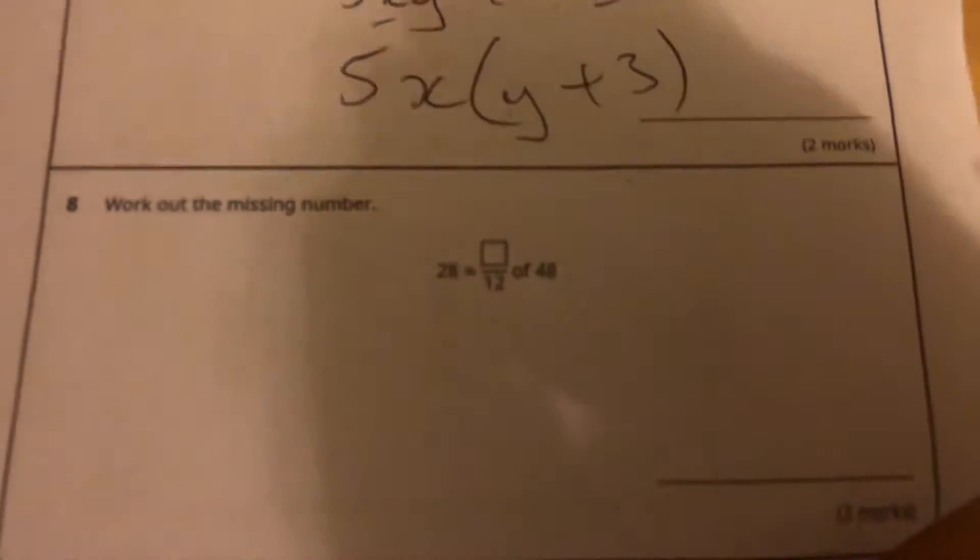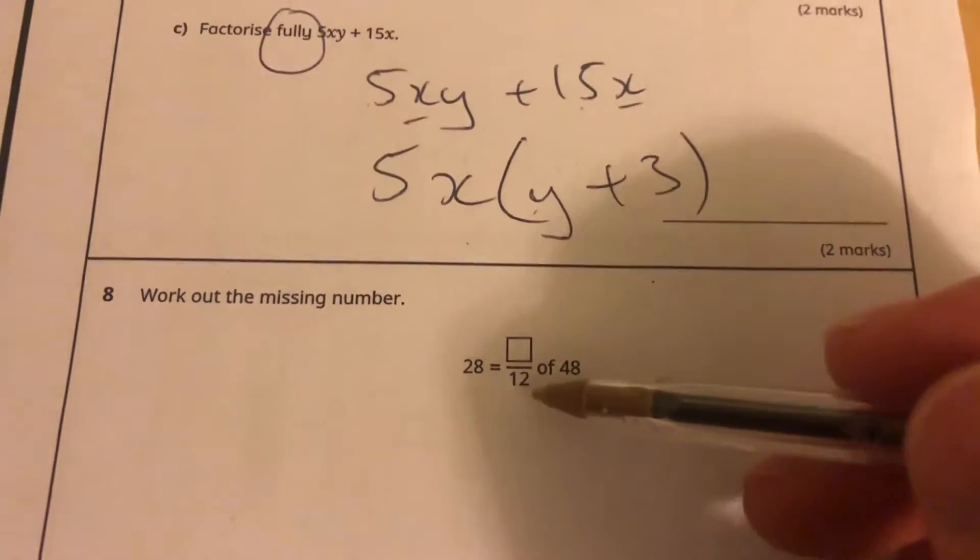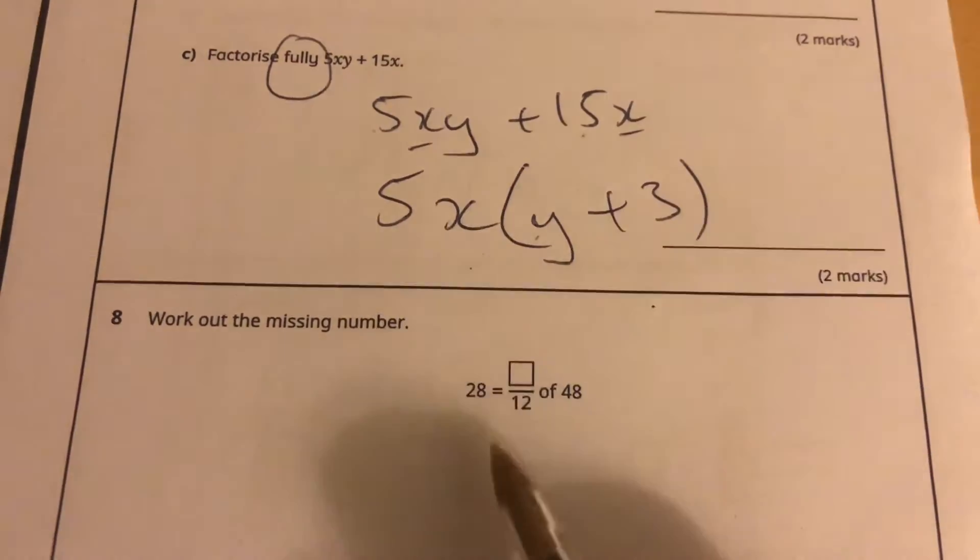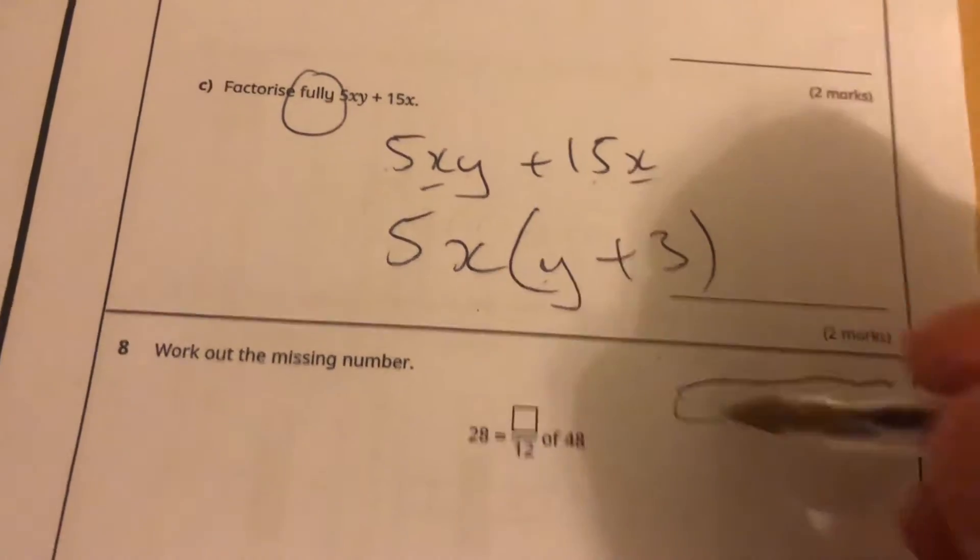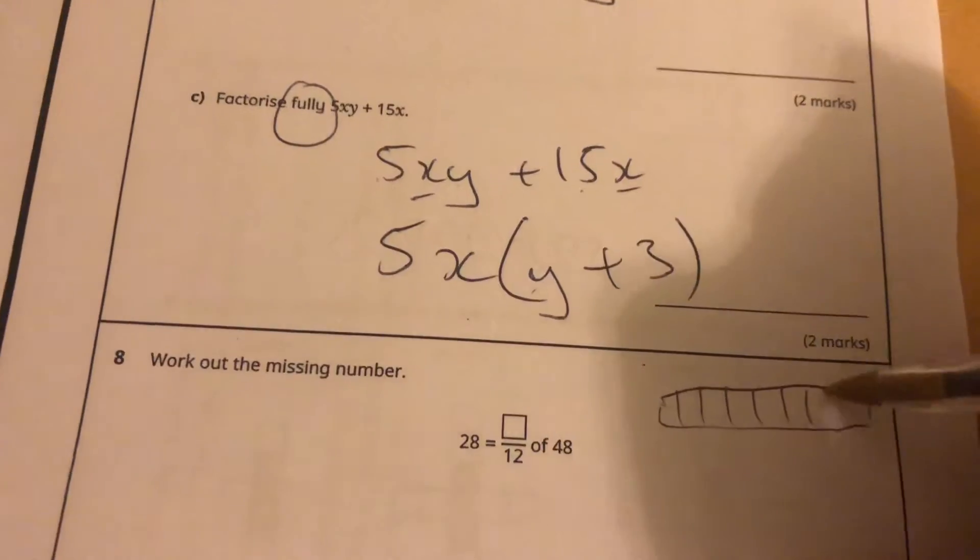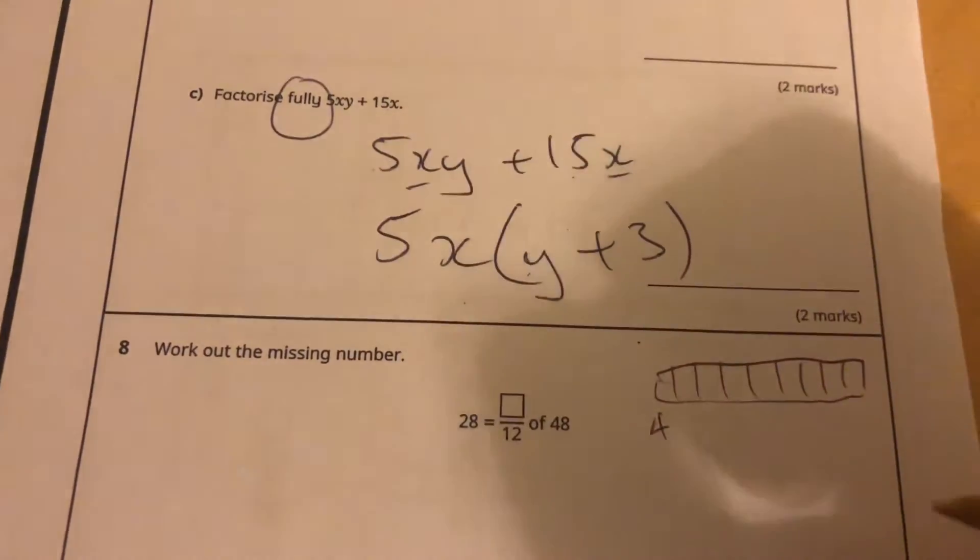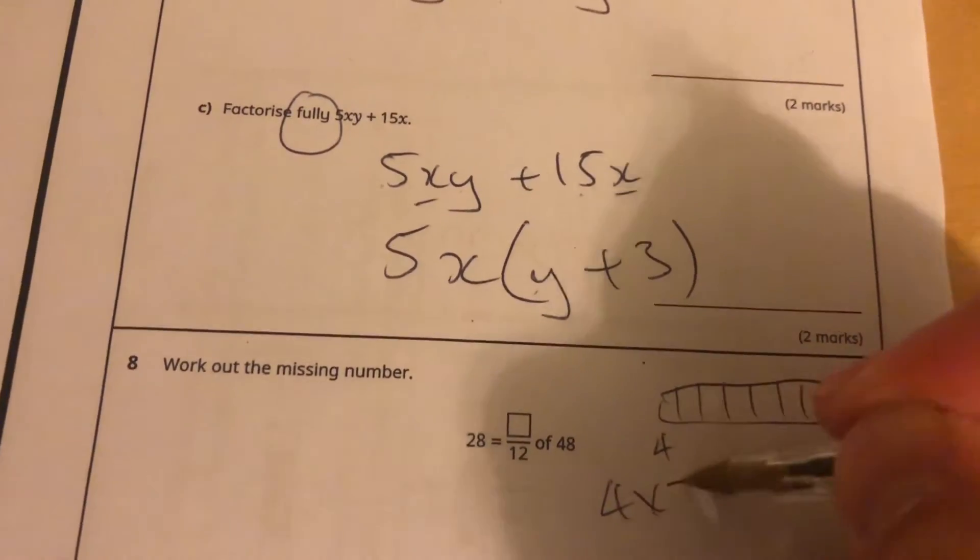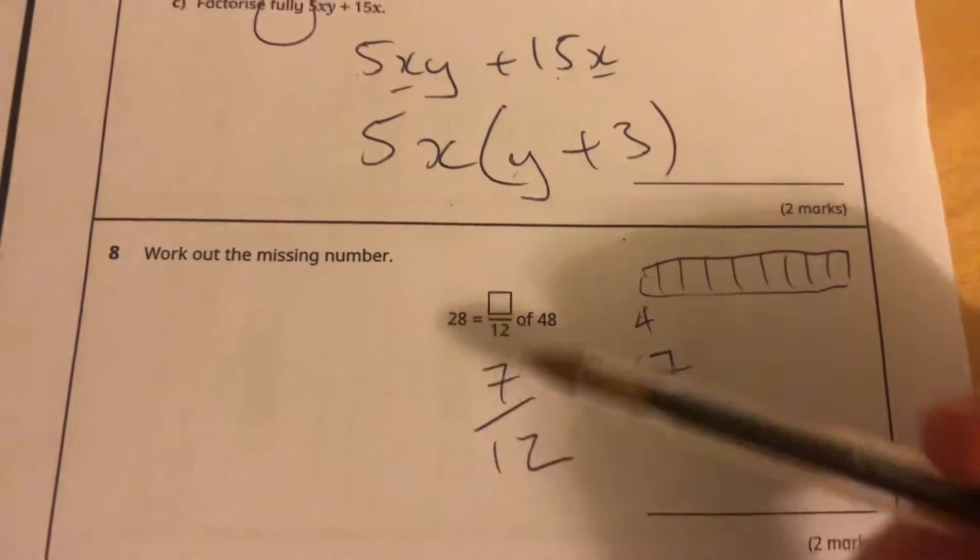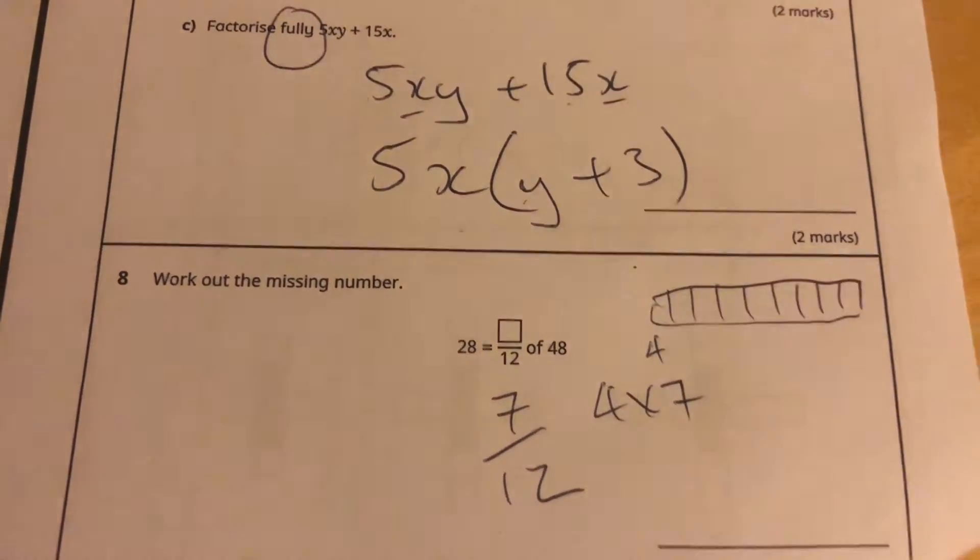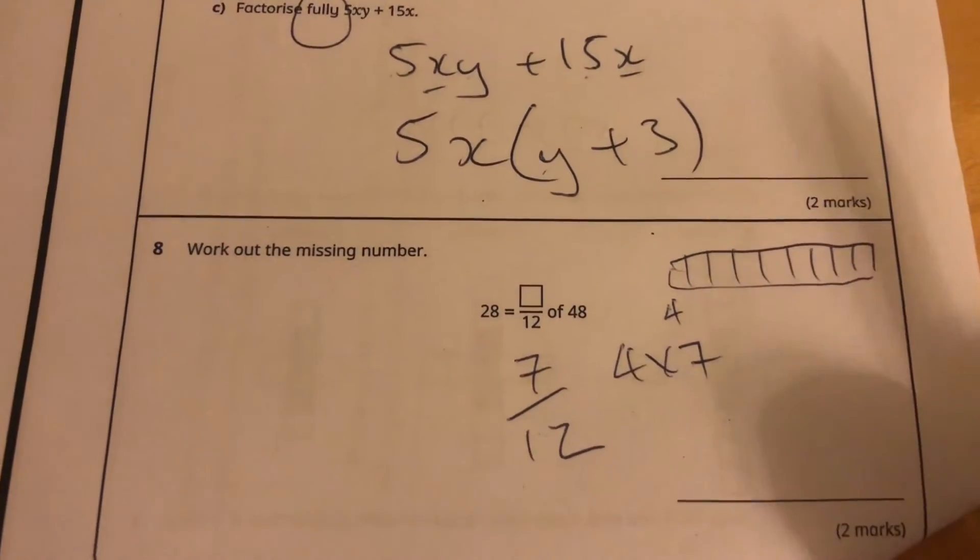Work out the missing number here. 28 is what fraction of 12 out of 48? I know that 12 goes into 48 four times. So each of those twelfths, if I had a model there - 1, 2, 3, 4, 5, 6, 7, all the way up to 12 - each of those would be 4. And 7 of them would be 4 times 7 makes 28. So it's going to be 7 twelfths. Go through the fractions lessons and videos if you need more on that.